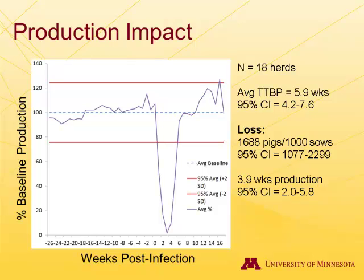The loss we can characterize in numbers of pigs per thousand sows is about 1,700 pigs per thousand sows on farm. Converted to an easier way of thinking about it, you lose about 3.9 weeks of production — so the whole 3.9 weeks of all your piglets just being lost over the course of that entire break.